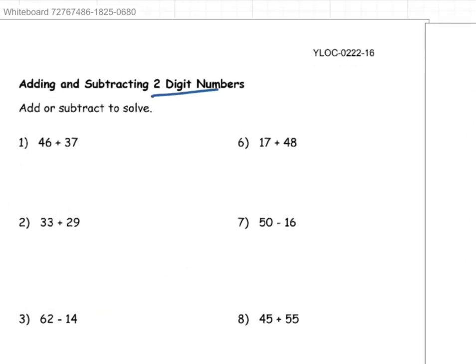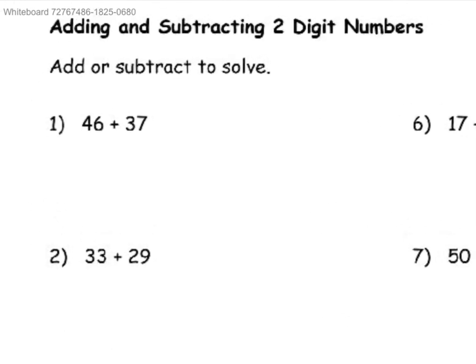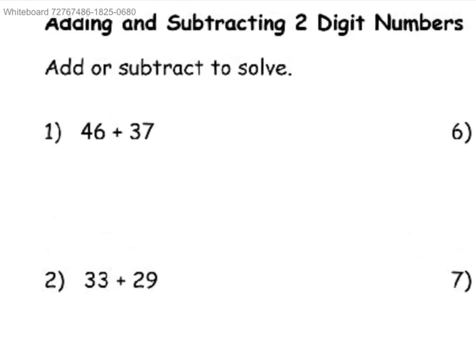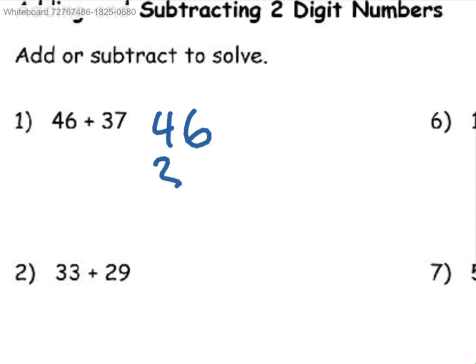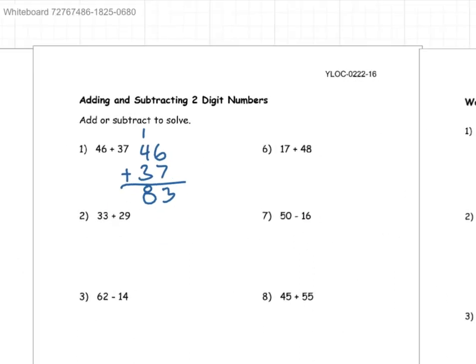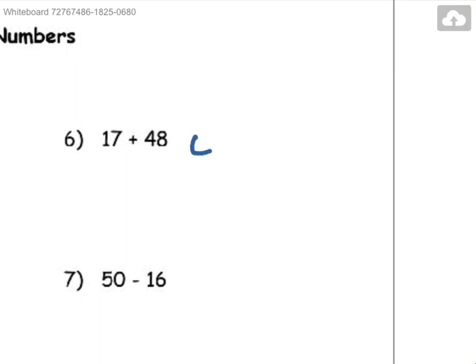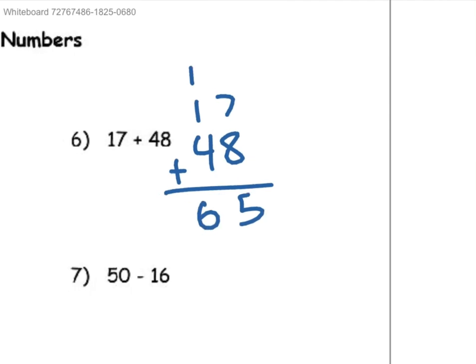Adding and subtracting 2-digit numbers. Add or subtract to solve. So this is addition, 46 plus 37. 6 plus 7 is 13. Carry the 1 over. So then 4 plus 1 is 5, 5 plus 3 is 8. 17 plus 48. 8 plus 7 is 15, carry the 1. And then 1 plus 1 is 2, 4 plus 2 is 6. So we have 65.